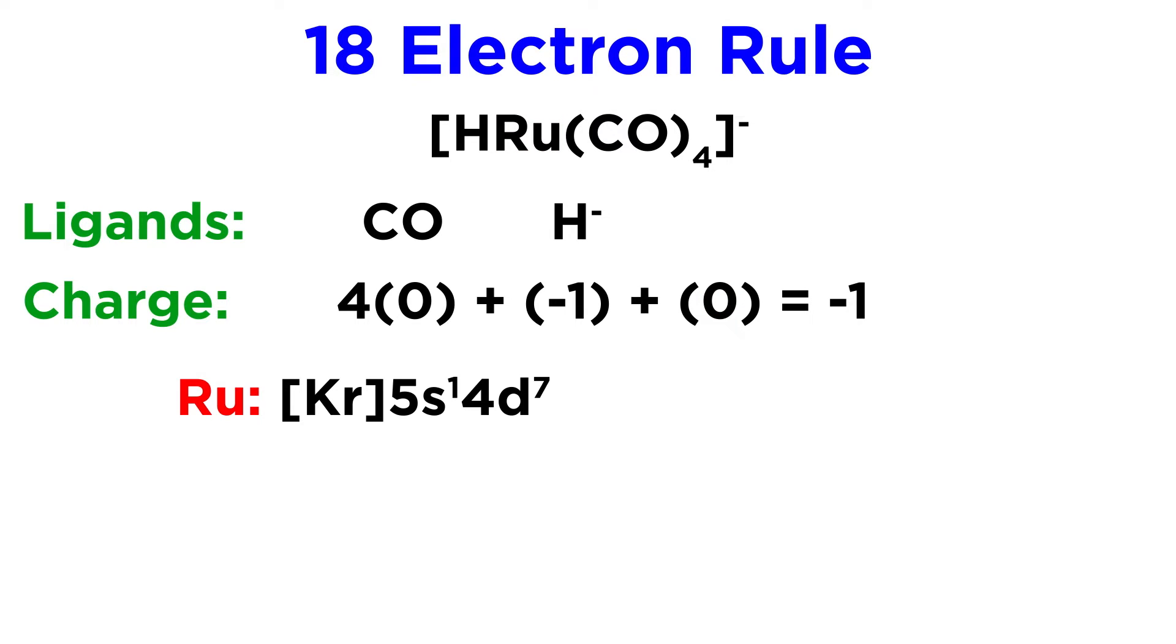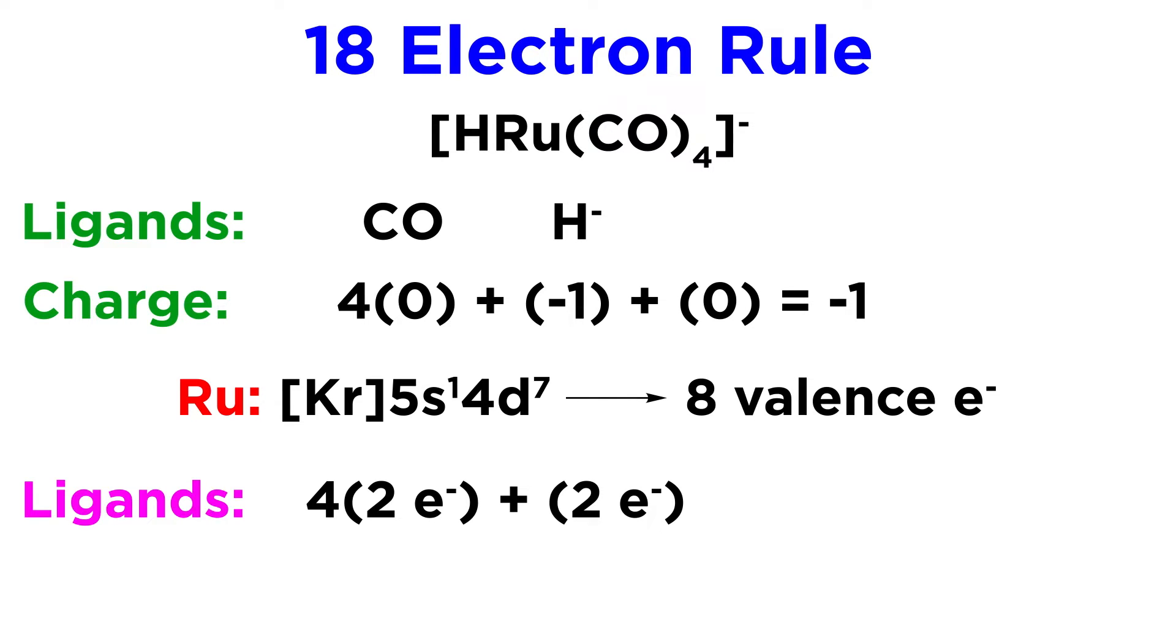Ruthenium is 5s1 4d7, which means it has eight valence electrons. Then we add up the electrons donated by the ligands, which will be two electrons for each of them, times five ligands equals ten electrons. Eight from the metal plus ten from the ligands makes eighteen, so this is likely to be a stable complex.